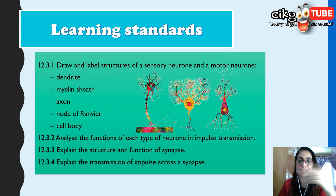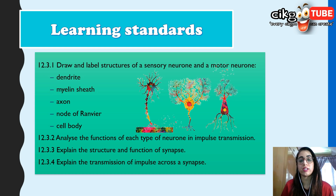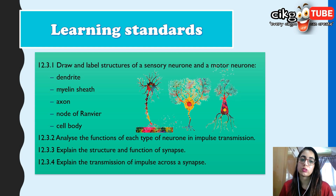Let's look at the learning standard before we begin. You should be able to draw and label the structure of a sensory neuron and a motor neuron — including the dendrite, myelin sheath, axon, node of Ranvier, and cell body. You should also analyze the function of each type of neuron in impulse transmission, explain the structure and function of synapses, and explain the transmission of impulse across a synapse.